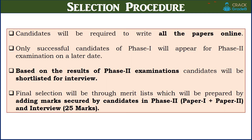The selection process is as follows: candidates will be required to write all papers online. Only successful candidates of Phase 1 will appear for the Phase 2 examination on a later date. Based on the Phase 2 result, candidates will be shortlisted for interview. The final selection will be through a merit list prepared by adding marks secured in Phase 2 and the interview. The interview carries 25 marks.